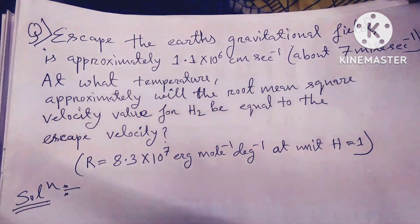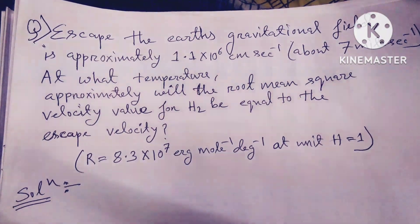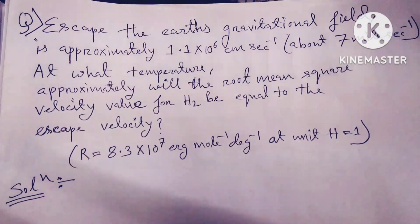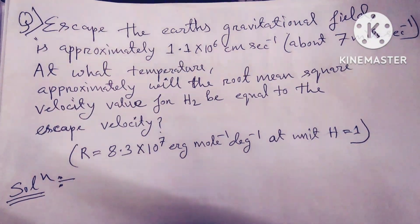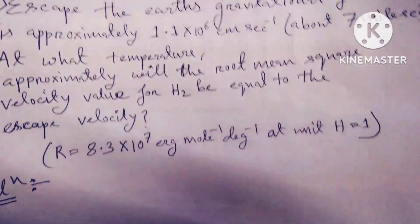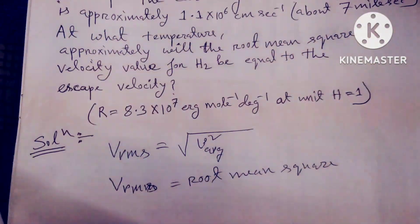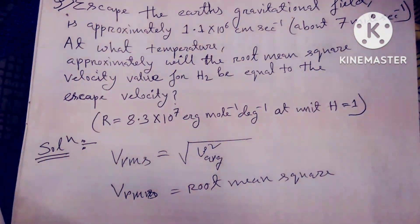Where R, the universal gas constant, is equal to 8.3×10⁷ erg per mole per degree, and the mass of hydrogen equals 2 grams per mole. So friends, the problem is a root mean square velocity problem.